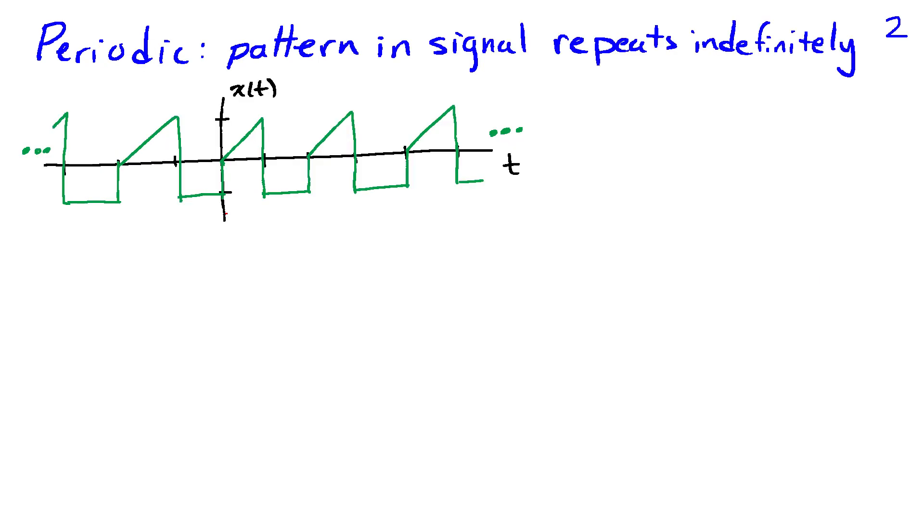A signal is periodic if there's a pattern in the signal that repeats indefinitely. So in what I've sketched here, this particular pattern repeats and repeats, and the dot dot dot indicates I'm implying it repeats forever and it repeats in the other direction too.